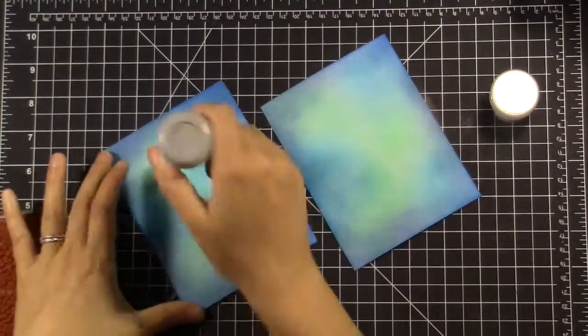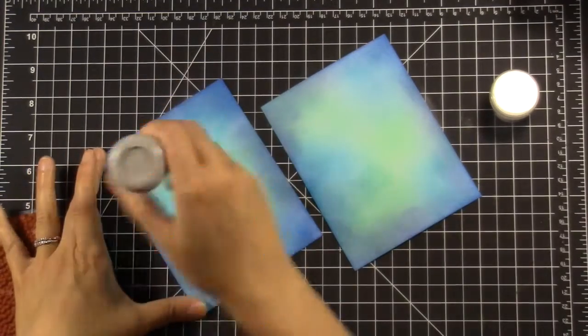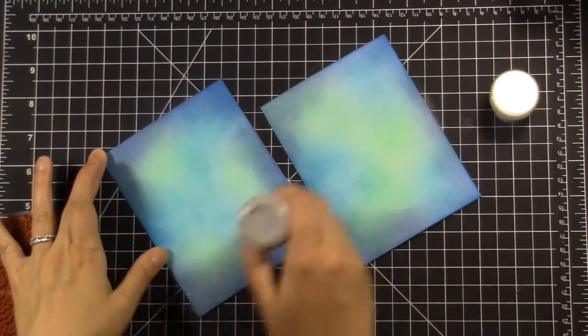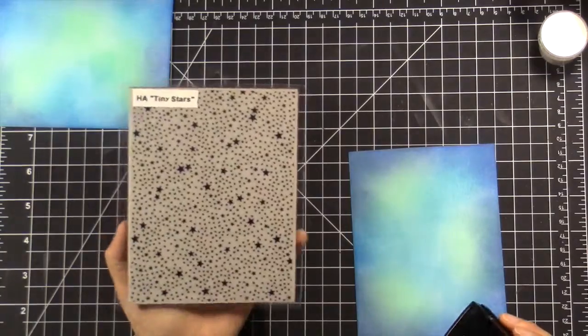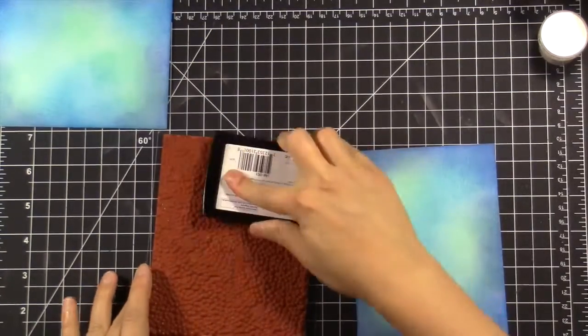So after I went ahead and blended them and let them sit aside for quite some time, I'm using my EK Success Powder Tool and just kind of coating the whole thing for both of them because we are going to do some heat embossing on the background.